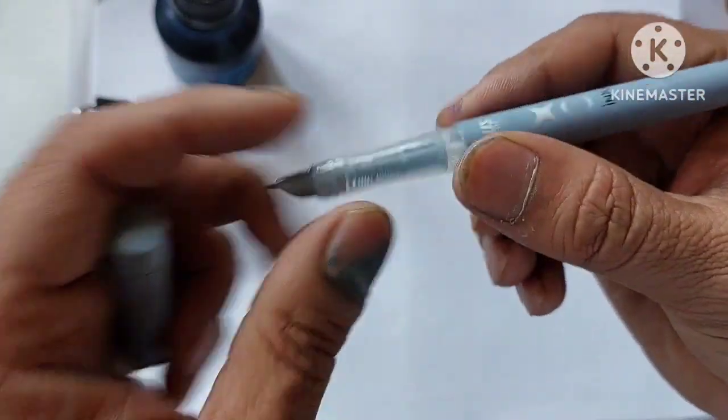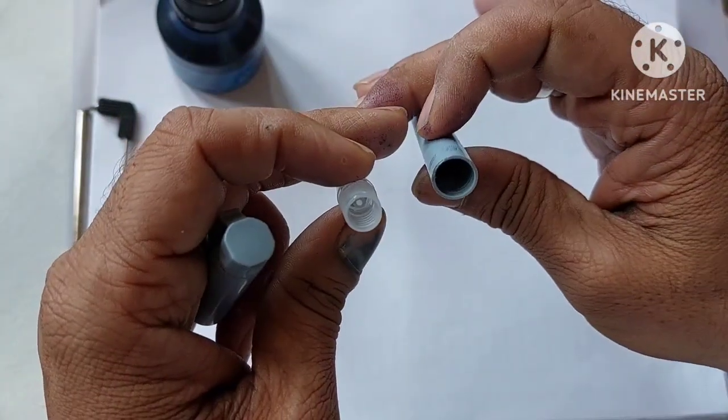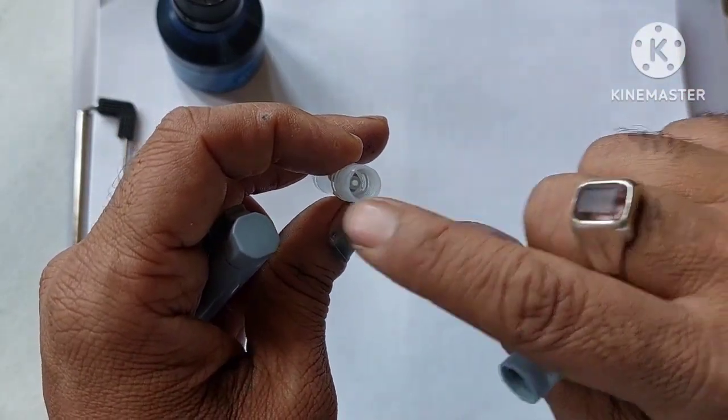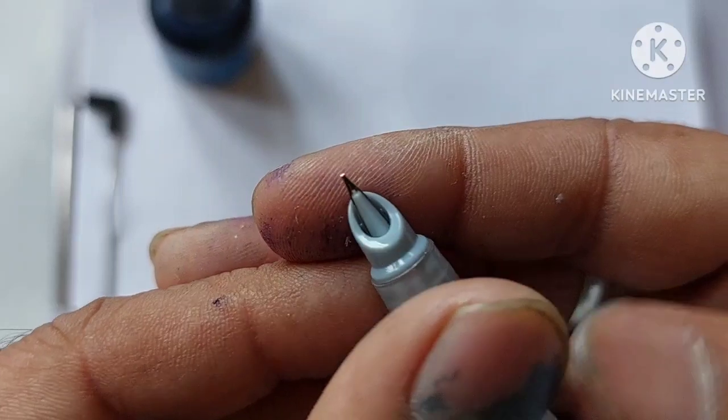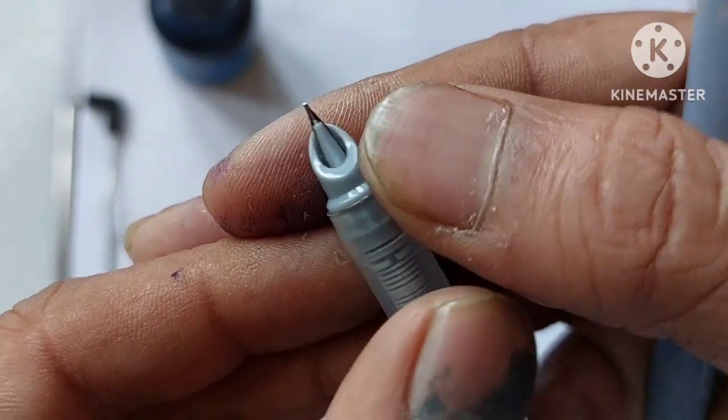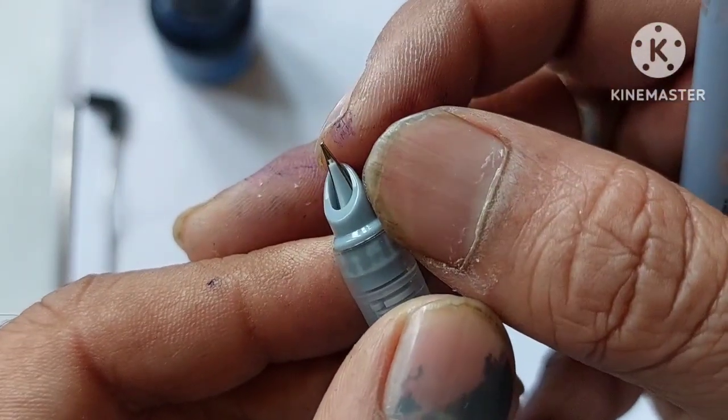The grip section is having this part over here, it is transparent. This is the part as you can see, the cartridge is to be inserted over here. This is the feeder of the pen and we have a very small nib over here, which is inserted into this feeder section. This is a small plastic feeder and a small rounded nib over here.